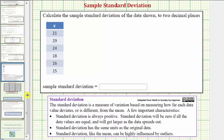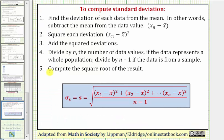In order to calculate standard deviation, we'll follow these steps. Step one, we find the deviation of each data value from the mean. In other words, we subtract the mean from the data value. Step two, we square the deviation. Step three, we add the squared deviations.